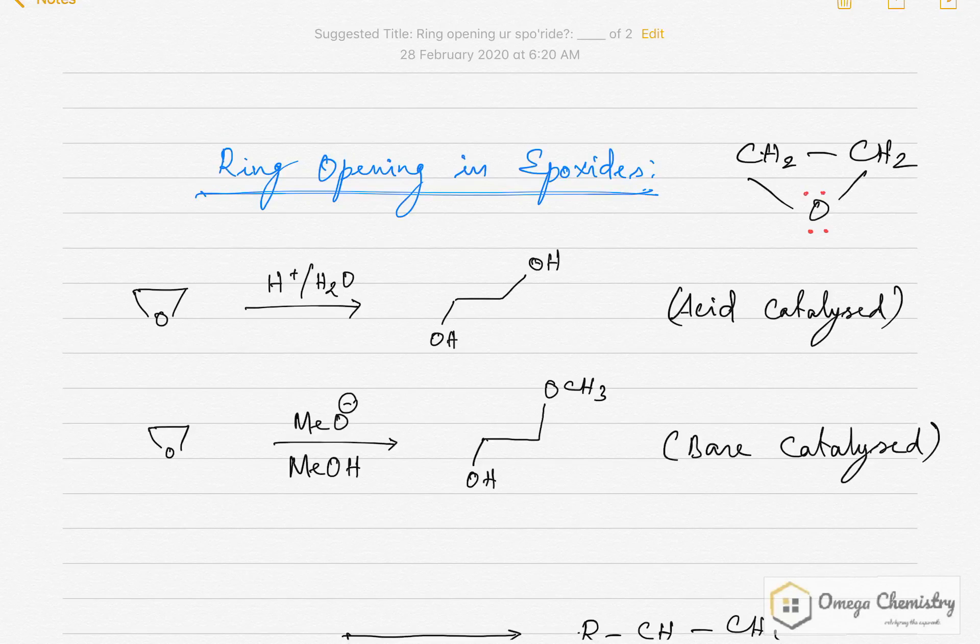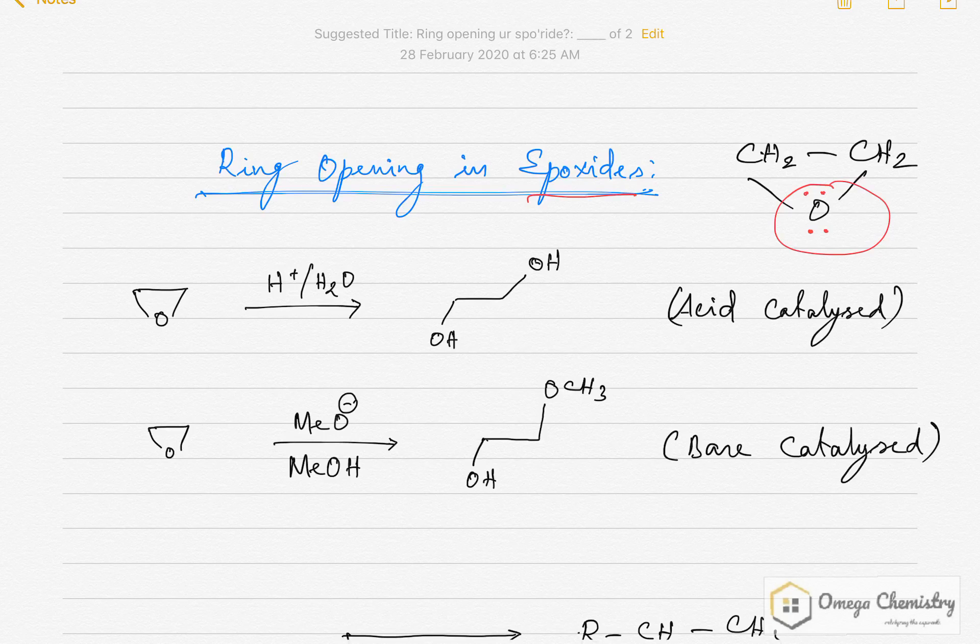Today, let us study about ring opening reactions of epoxides. Epoxides are three-membered heterocyclic compounds with an oxygen atom. These cyclic compounds can be broken into linear compounds by either acid or base catalyzed reactions, which is given here.